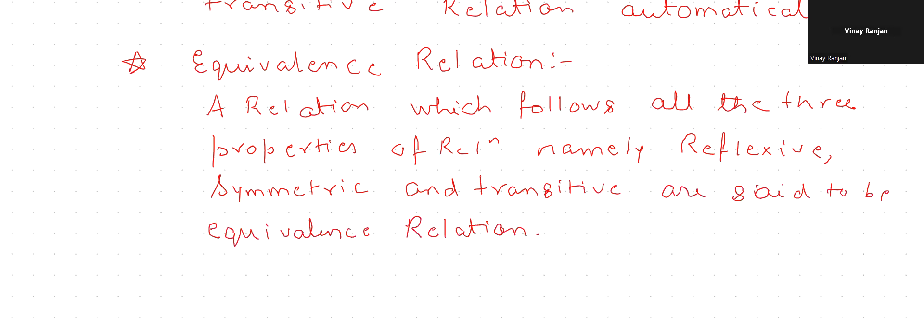So these are the types of relations. In upcoming classes we will discuss all of them in much more detail with examples, and we'll clarify the relationship between identity and reflexive relations. After that we will proceed further. Any doubts? Good to go — see you in class, bye-bye, take care, have a good day.